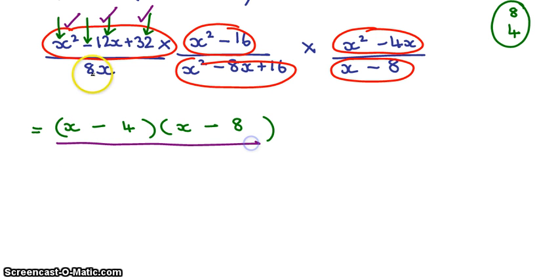Now the bottom of this fraction was 8x, which is already one term, so we don't have to factorize. Next, x squared minus 16. I should recognize that immediately as the difference of two squares, so x minus 4, x plus 4.